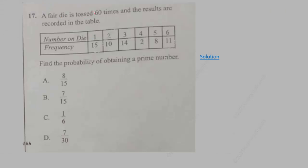Question 17: A die is tossed 60 times, and the results are recorded in the table as shown. Find the probability of obtaining a prime number. So the prime numbers are 2, 3, and 5. These are the frequencies, so the number of times is 10. Add all the corresponding frequencies of the prime numbers, which is 10 plus 14 plus 8, and divide by the total outcome, which is 60. That will give you 32 over 60, which is the same as 8 over 15.